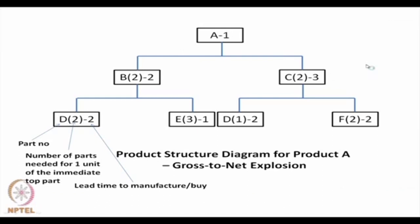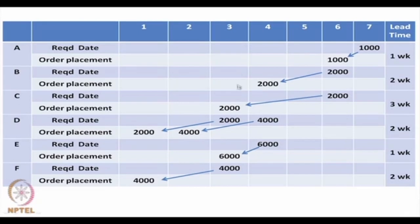We can use this information as follows. Suppose we need to get 1000 items of A on August 7. With a 1-week lead time, the order must be placed for A for 1000 items on the 6th. Since A requires 2 items of B and 2 items of C, then B and C must be available in sufficient quantity to manufacture 1000 items of A. To get 2000 items of B requires 2 days, so the order must be placed for 2000 items accordingly. For 2000 items of C with a 3-week delay, the order must be placed on August 3rd.